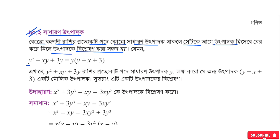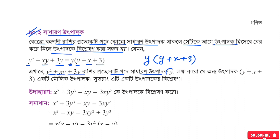We have y² + xy + 3y. Here we see three terms, and y is common in each. So we factor out y. After taking y common, we get y(y + x + 3). This is the expression with y as a common factor, giving us y(y + x + 3).